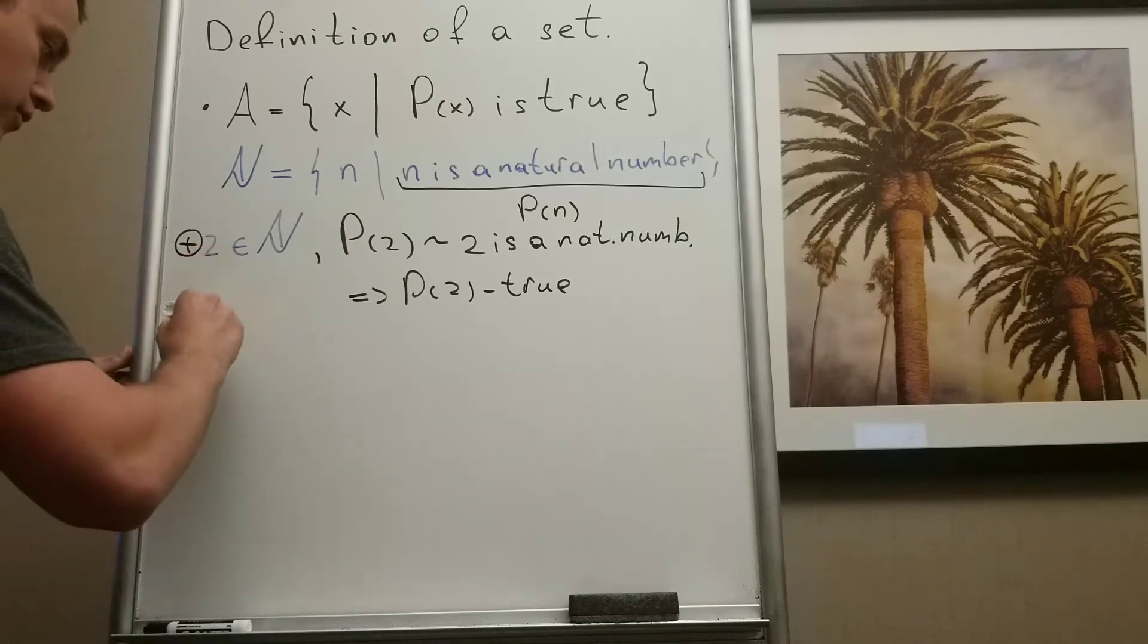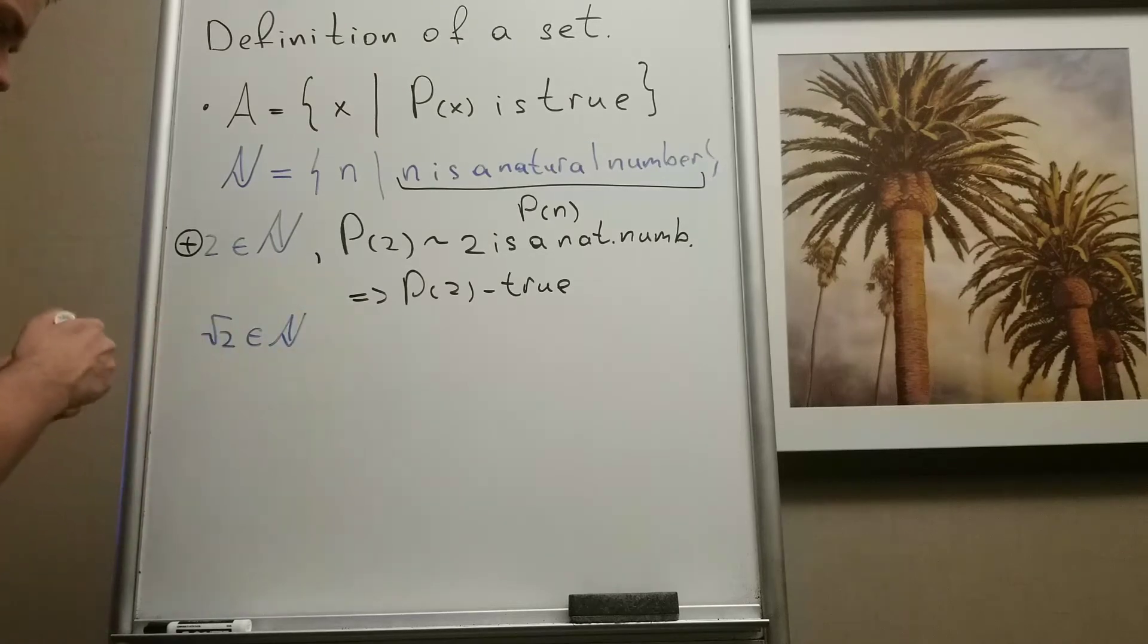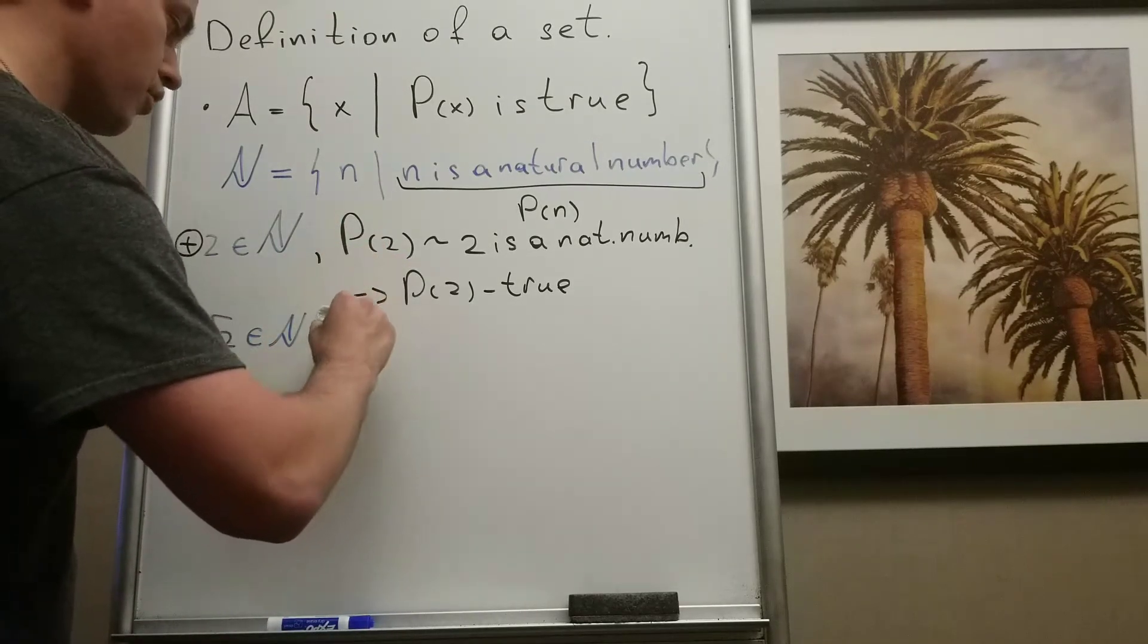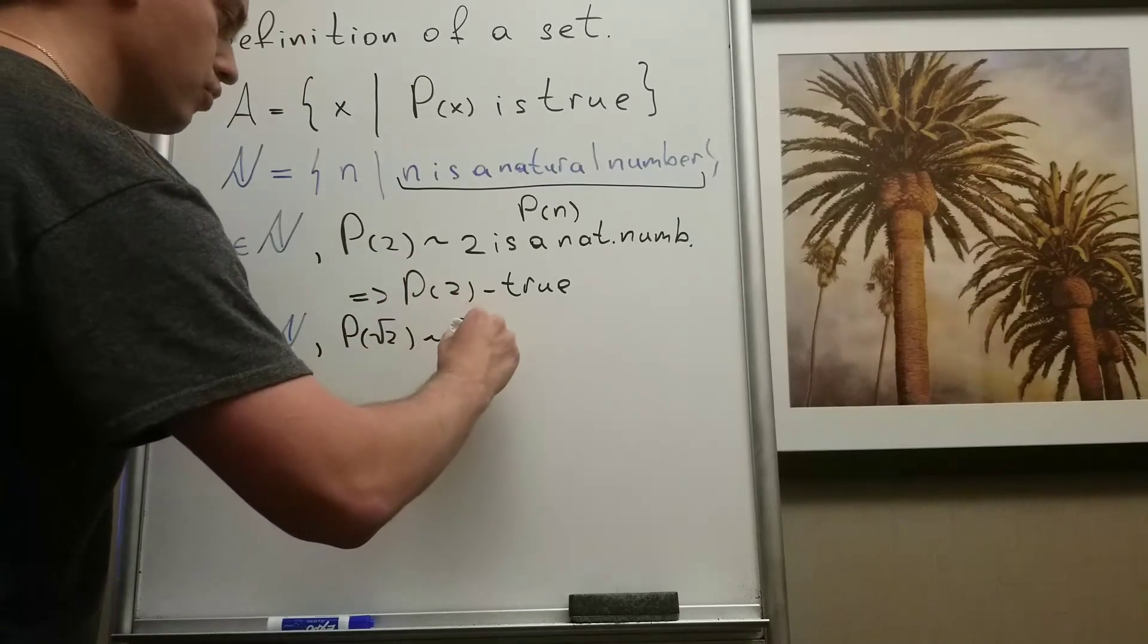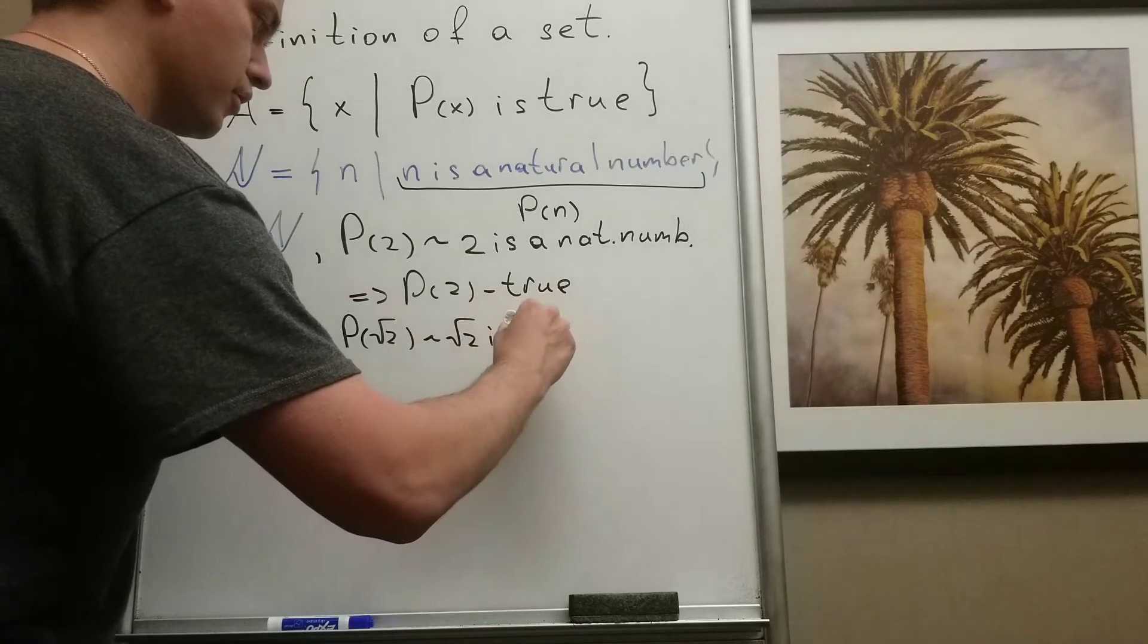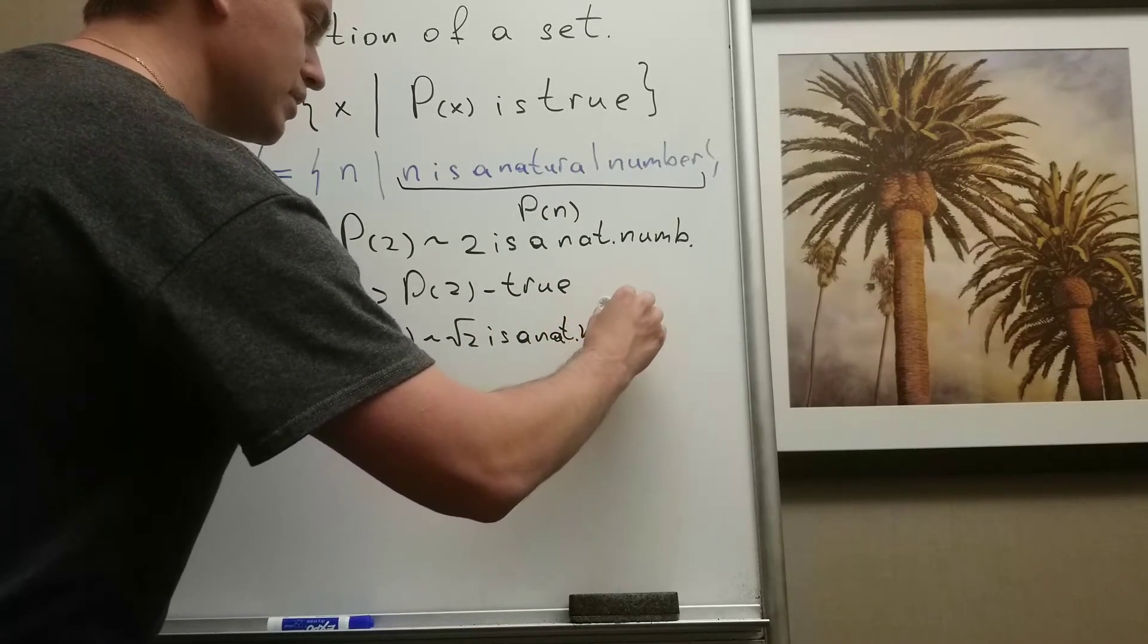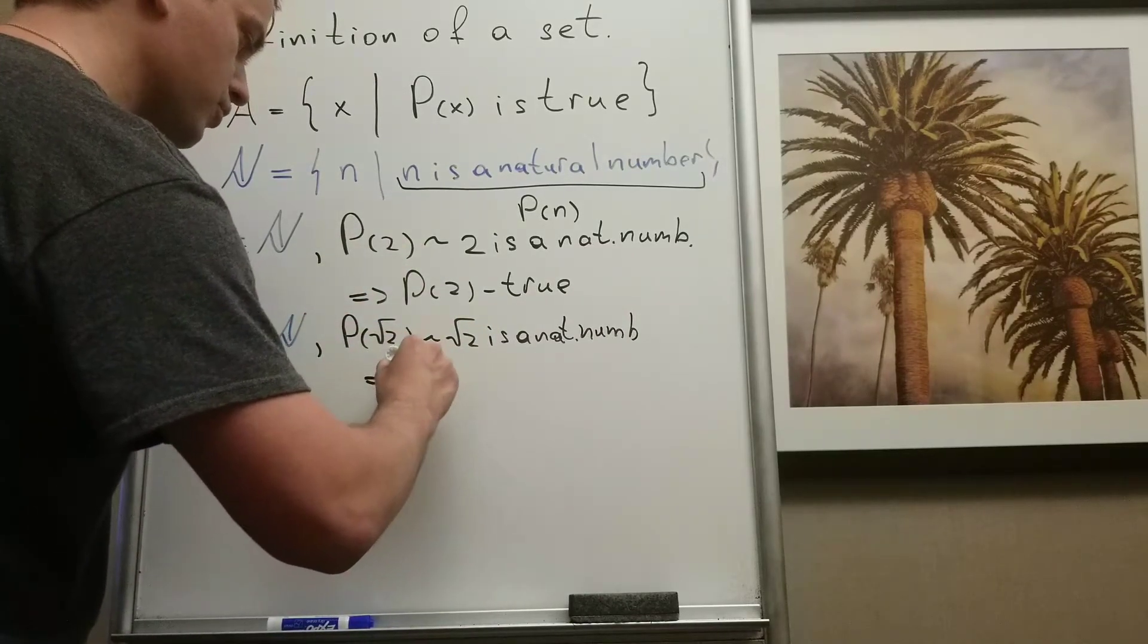For example, square root of 2 belongs to natural numbers? In this case, we'll get that my statement P of square root of 2 is equivalent to: square root of 2 is a natural number. But we know that square root of 2 is not a natural number, so from here we'll get that P of sqrt(2) is false.